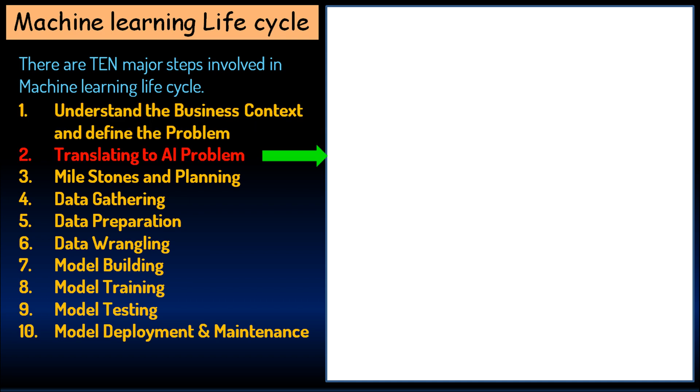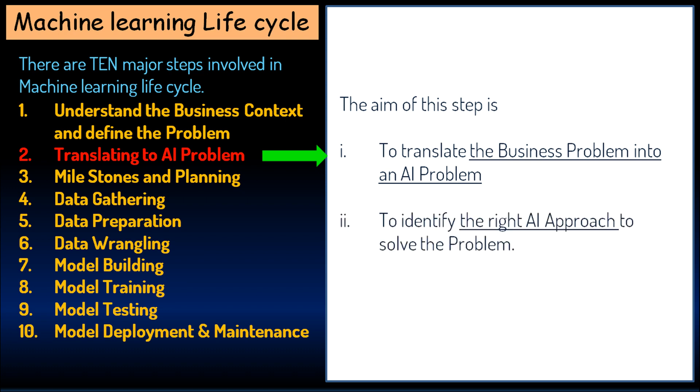The second step is translating the business problem to an AI problem. The aim of this step is to translate the business problem into an artificial intelligence problem and to identify the right AI approach to solve the problem.